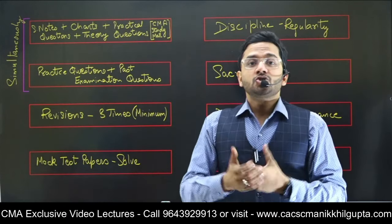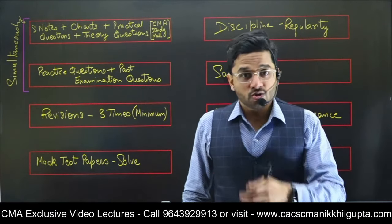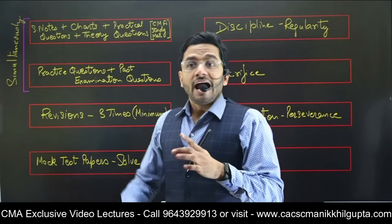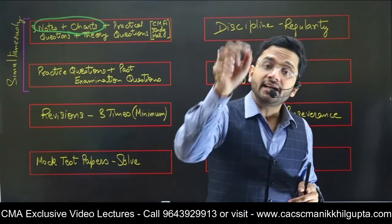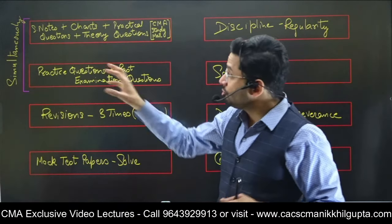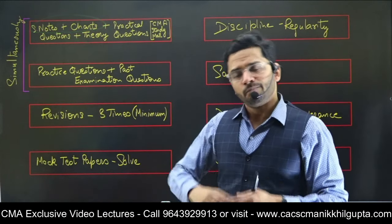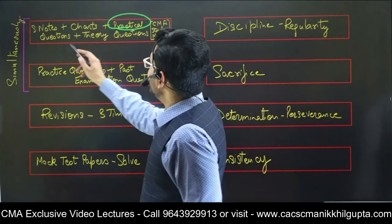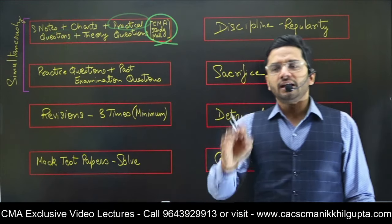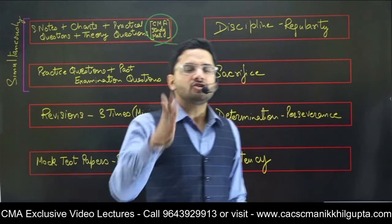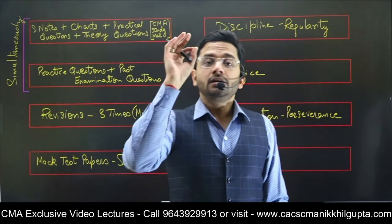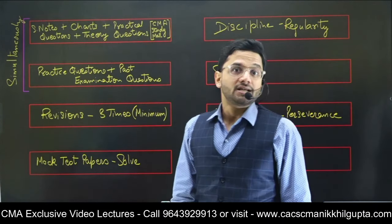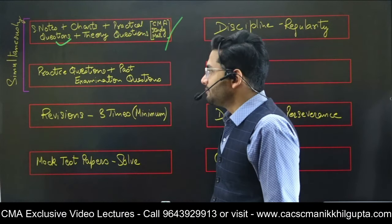Take printouts of charts for C category chapters — specifically the PDF charts if you have taken my classes. For A and B category chapters, don't take printouts — make them yourself in your register. Make summary notes and charts wherever required, specifically for A and B category chapters. Practical questions are to be done using the CMA study mat, which is very important. Each and every question from the CMA study mat should be included in your studies — that is a must.